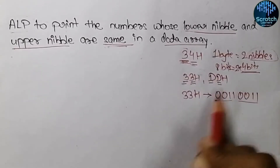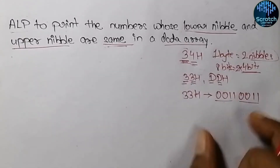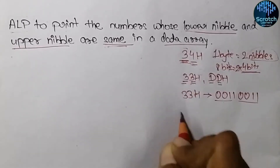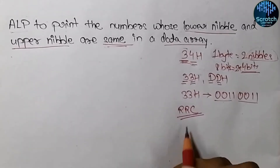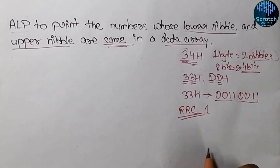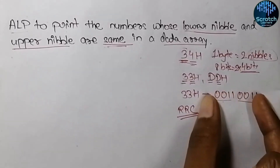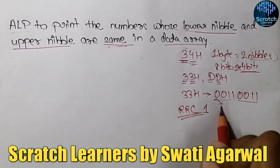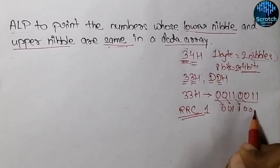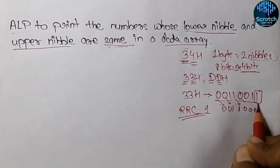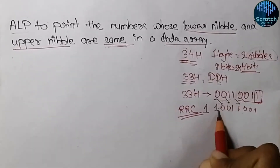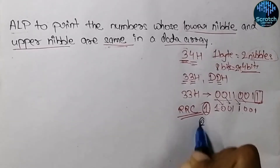We will rotate this data four times, either towards right or left. I will rotate towards right using the RRC instruction — rotate the content of the accumulator towards right without carry. On the first rotation, each bit shifts one position right, and the least significant bit wraps to the most significant bit position. On the second rotation, the same wrapping occurs again.